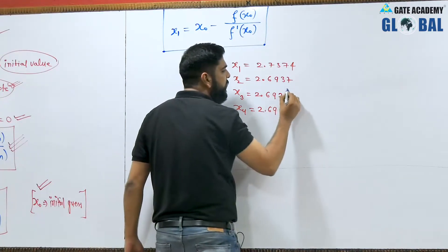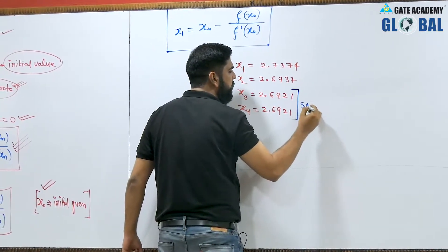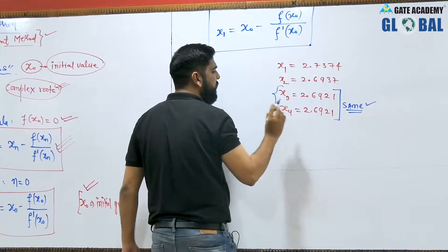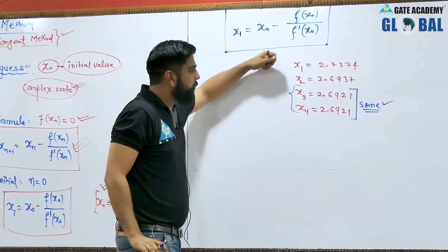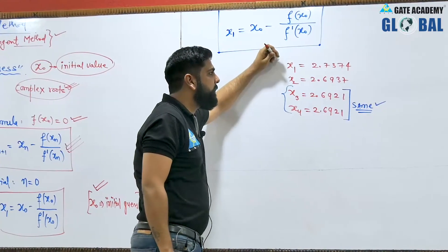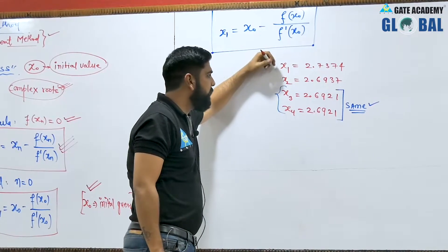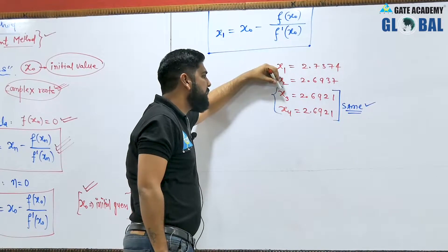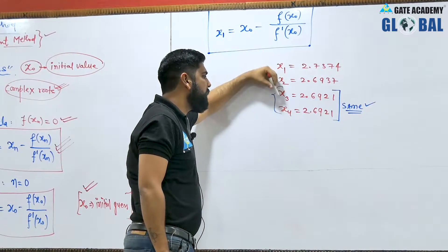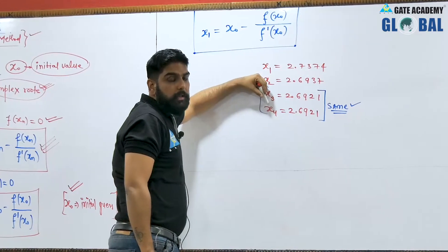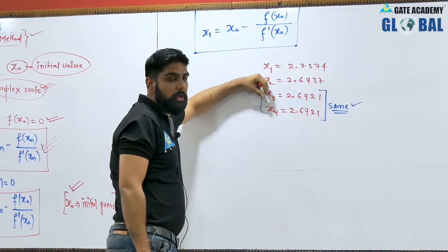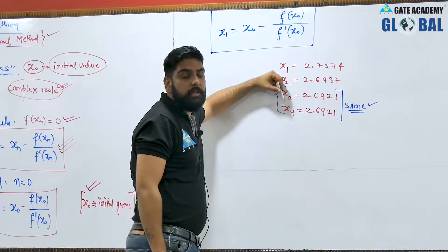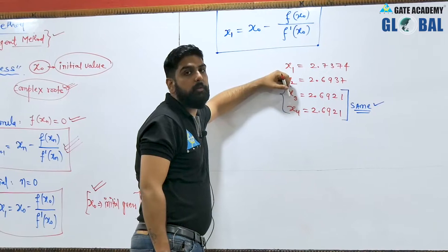If two consecutive iterations are the same, we can successfully say we have found the answer. When x_3 and x_4 both equal 2.6921 and repeat, that repeated value is our root.